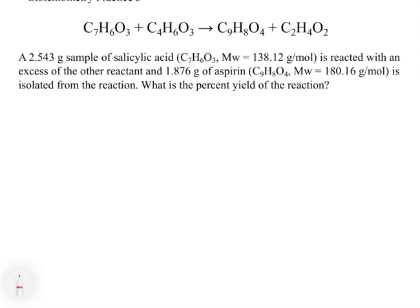The next problem states: a 2.543-gram sample of salicylic acid is reacted with an excess of the other reactant, and 1.876 grams of aspirin is isolated from the reaction. What is the percent yield of the reaction? Since the other reactant is in excess, we know that the salicylic acid is our limiting reagent.